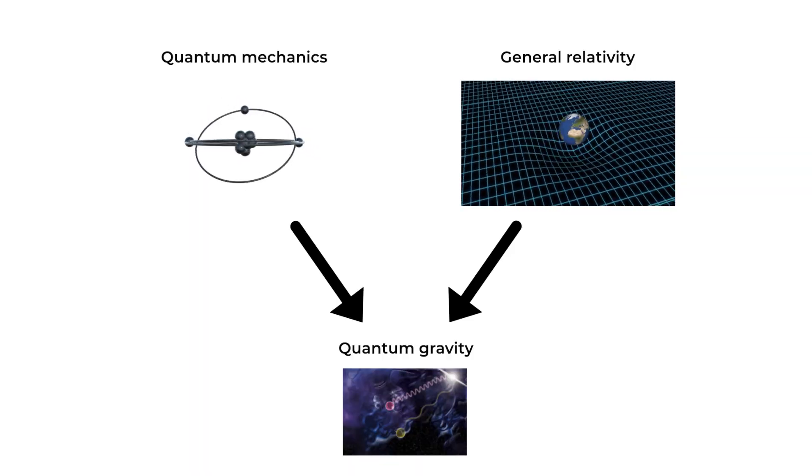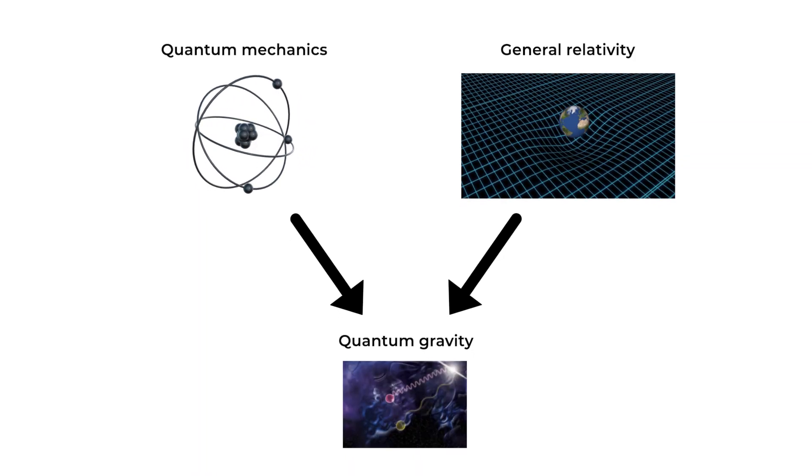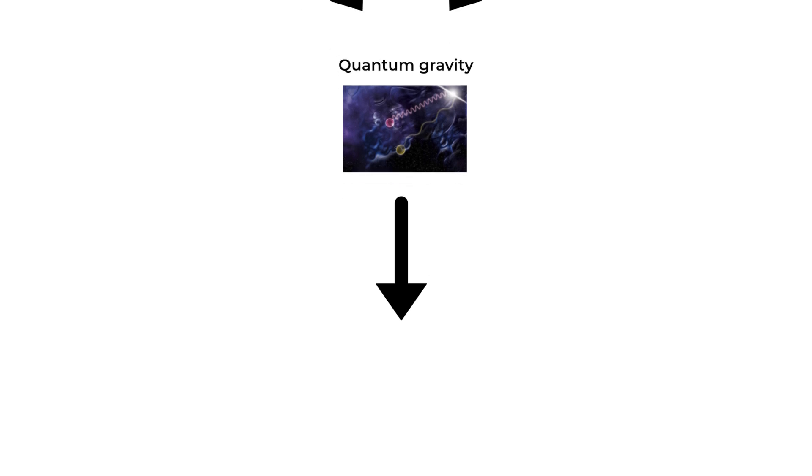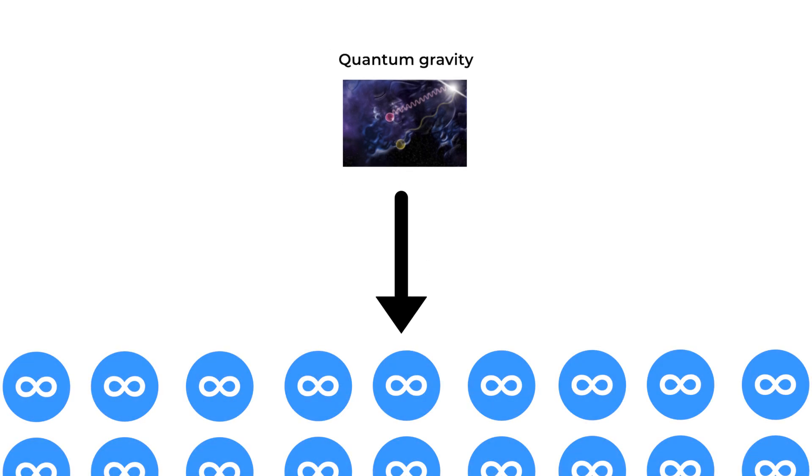Ever since the early days of quantum mechanics and general relativity, scientists have tried to merge the two without success. Even today, we don't know the correct way to combine them. Scientists apply the same techniques to quantum mechanics and gravity that they use to merge electromagnetism, quantum mechanics, and special relativity. It worked for electromagnetism, but for gravity, an infinite number of infinities popped up. It just didn't work.